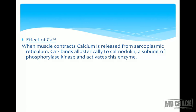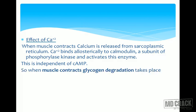This calcium mechanism is independent of cyclic AMP. The muscle cannot depend solely on epinephrine signaling to degrade glycogen, because that process takes too long. When a muscle contracts and needs energy immediately, the calcium-mediated mechanism directly activates glycogenolysis without waiting for hormonal signals.